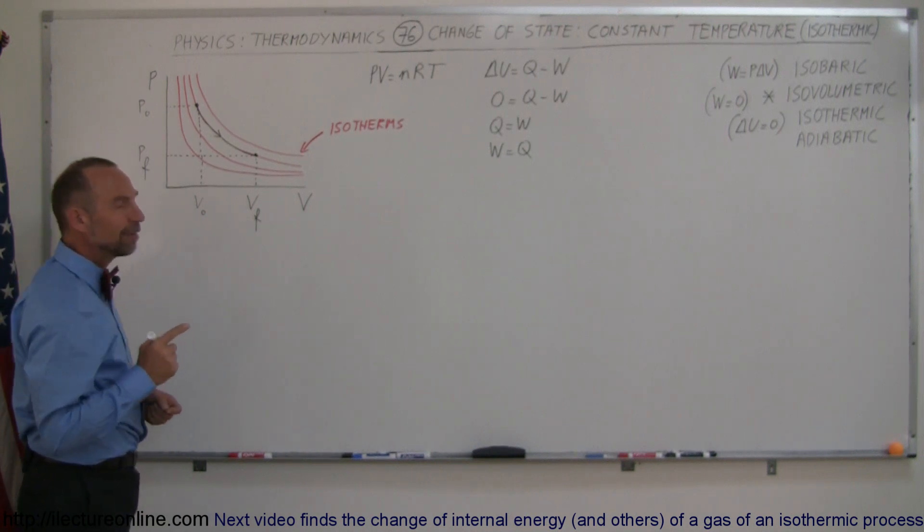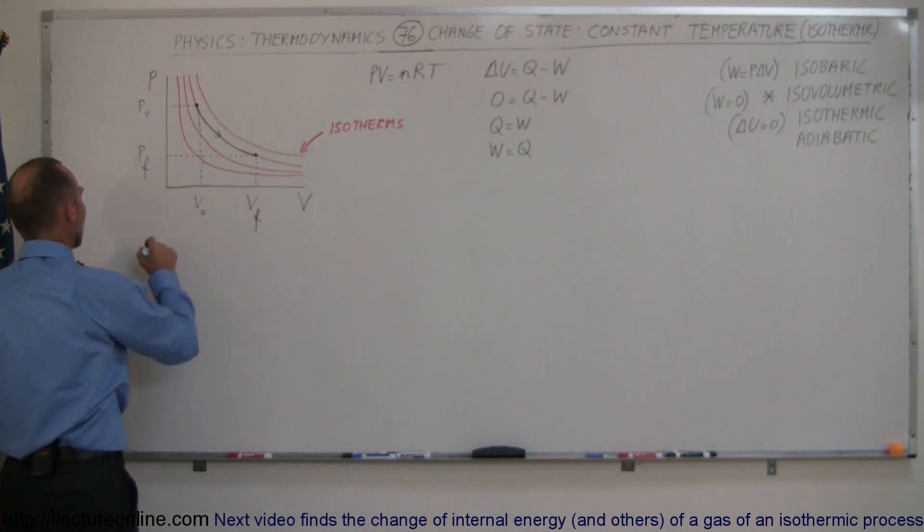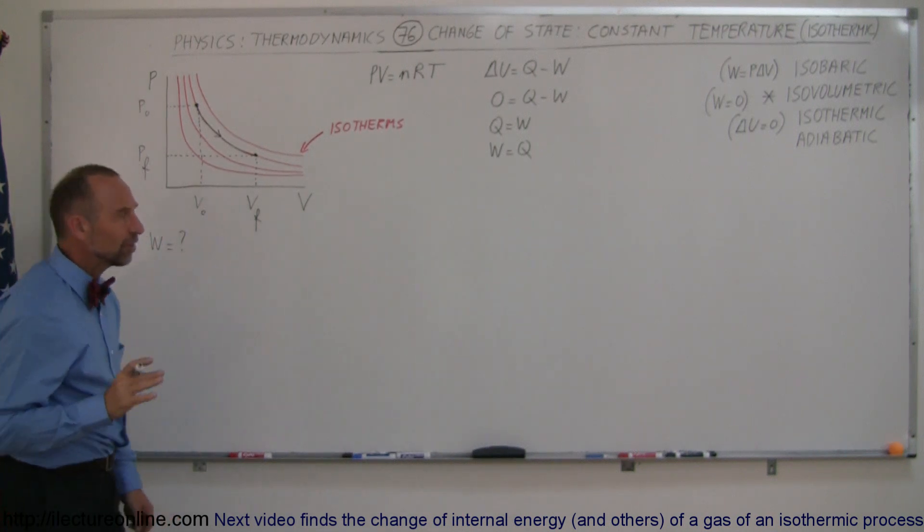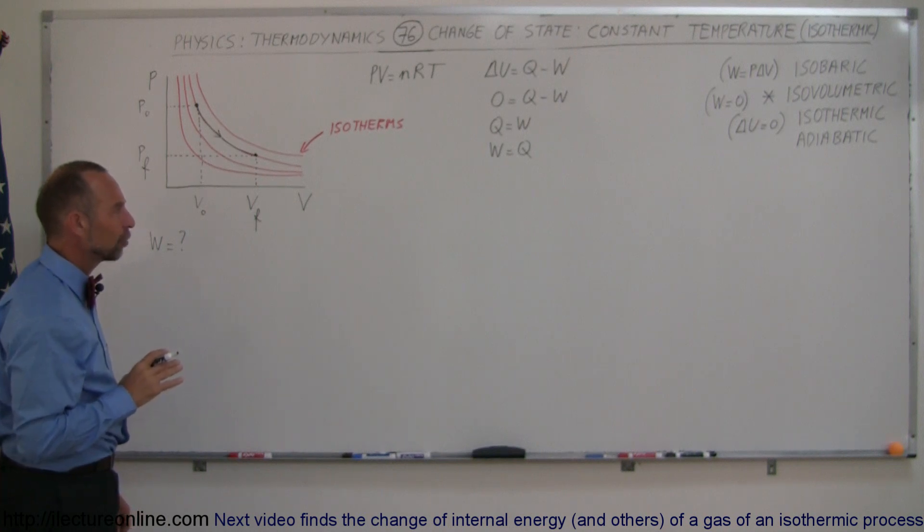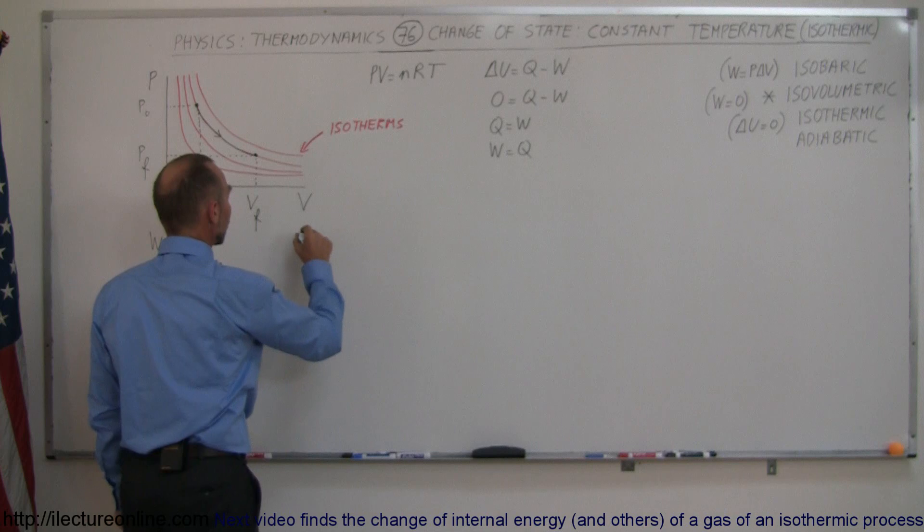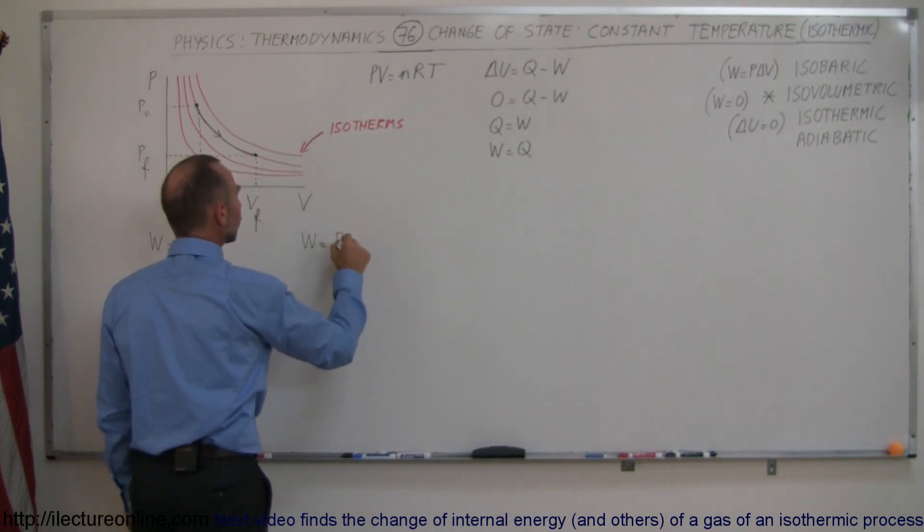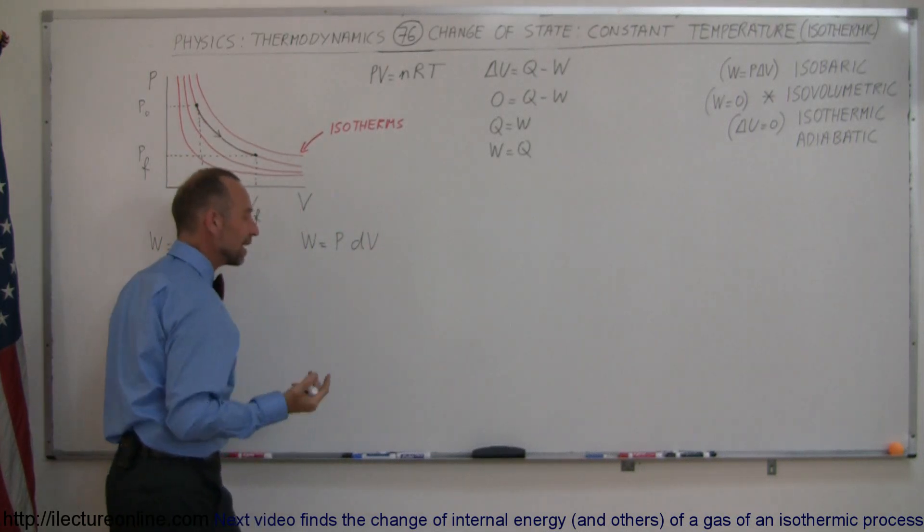All right, that said, how do we then figure out what the work done is by such a process? Remember what we said if we had an isobaric process, one where the pressure didn't change. We said that the work done is equal to the pressure times the change in the volume, dV.